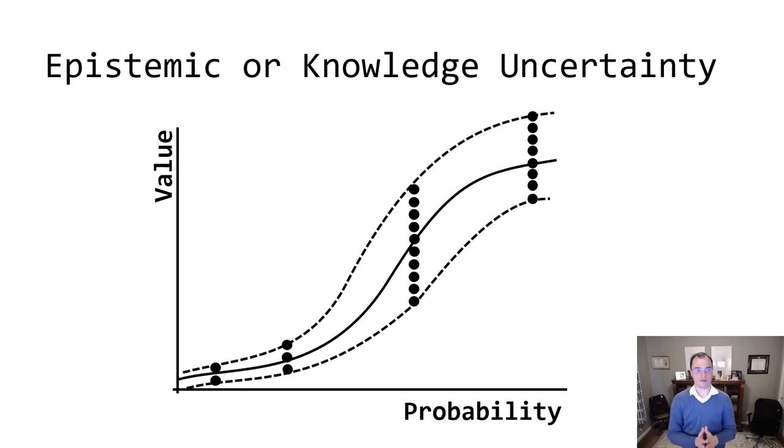There's another variability that we need to know about, or an uncertainty that we need to know about. We call it epistemic uncertainty or knowledge uncertainty. Knowledge uncertainty is trying to describe the fact that due to our limited knowledge, we may or may not be able to predict this relationship with certainty.